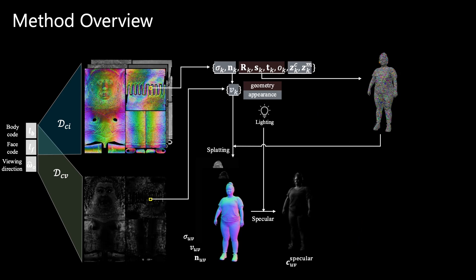For specular appearance, we employ a deferred shading scheme in which we first rasterize learned roughness, visibility, and normals into screen space, and compute specular colors for each pixel in screen space. This results in more detailed specular highlights compared to standard rasterization of specular appearance.